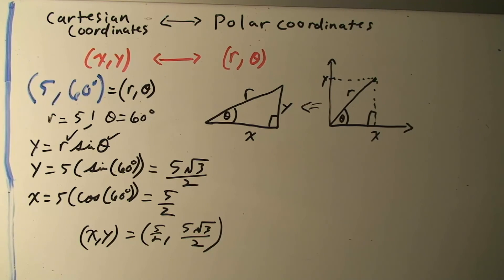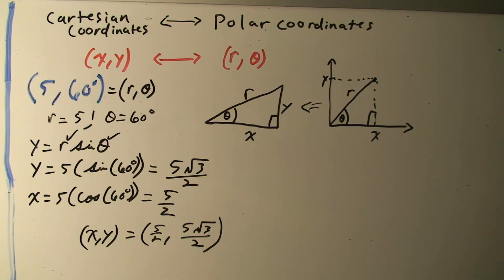All you need to do is apply your formulas to go from Cartesian to polar or from polar to Cartesian. This is only in two dimensions — you can apply the same approach to three dimensions, but you also have to solve for z and for the additional polar angle phi. Thanks for watching, and we'll see you in the next video.